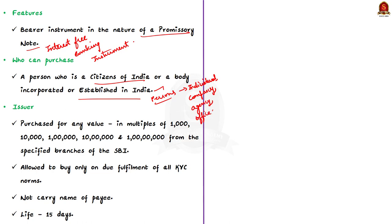Electoral bonds can be purchased for any value in multiples of Rs 1,000, Rs 10,000, Rs 1 lakh, Rs 10 lakh, and Rs 1 crore from specified branches of the State Bank of India. The purchaser is allowed to buy electoral bonds only on due fulfillment of KYC norms. Note that an electoral bond will not carry the name of the payee — a provision hotly contested as it could lead to corporate funding of elections.